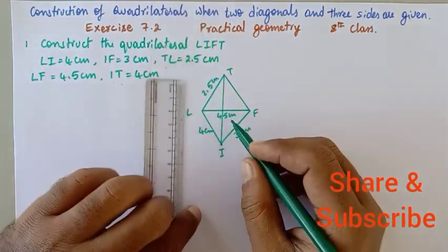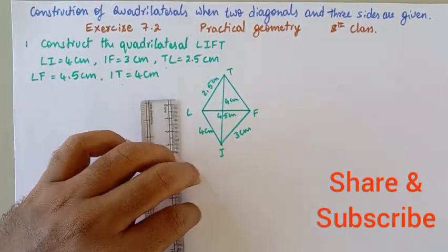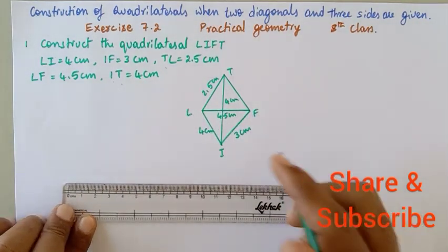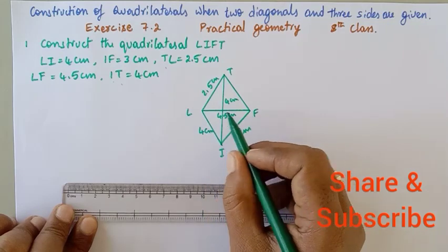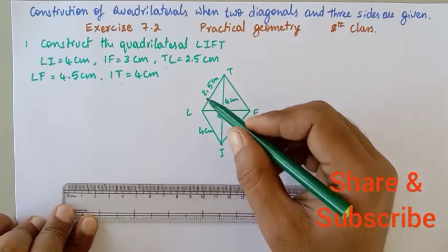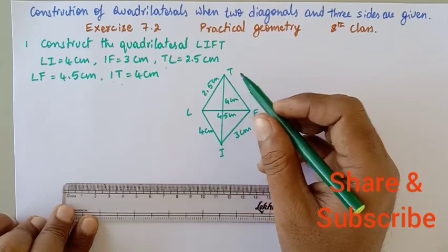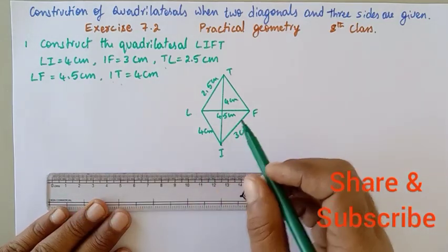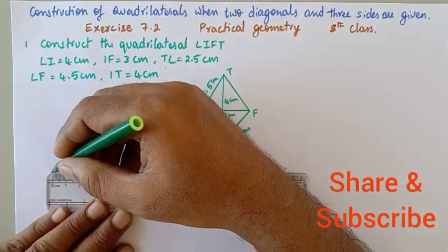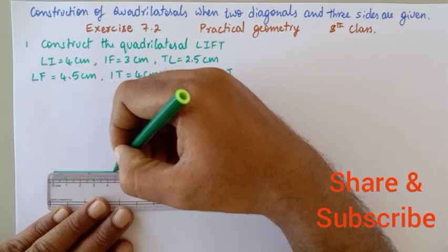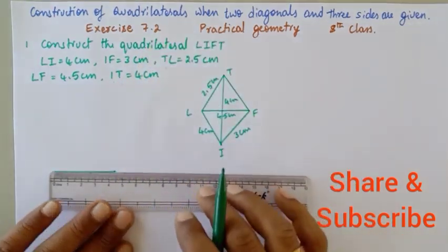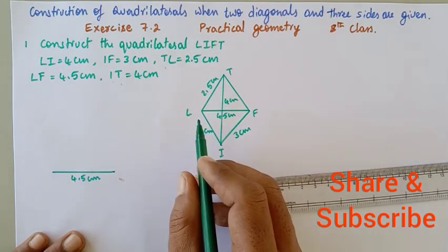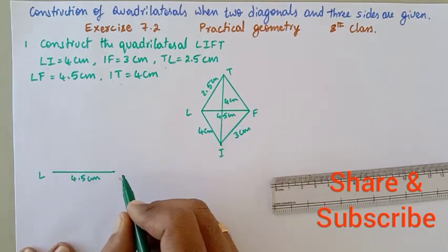To begin with, let me take LF — it will be very easy for us to first construct this triangle, and then the remaining side and diagonal. First, LF is equal to 4.5 cm. I have constructed 4.5 cm and named it L and F.